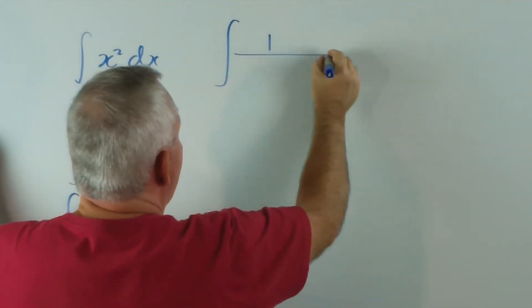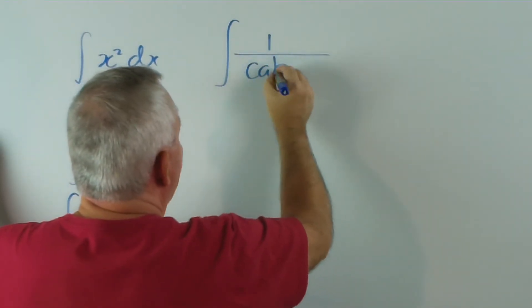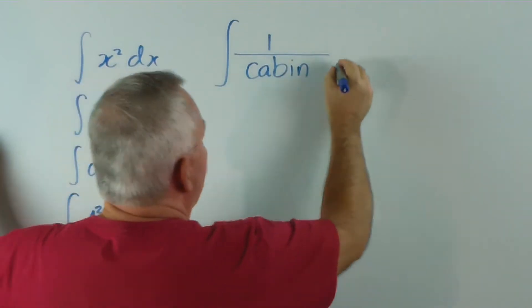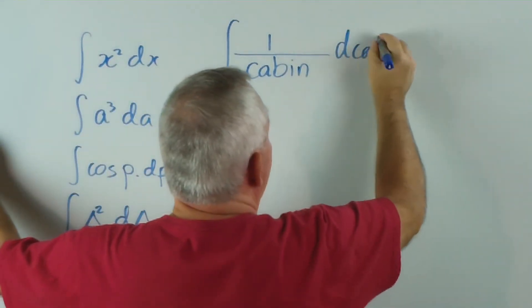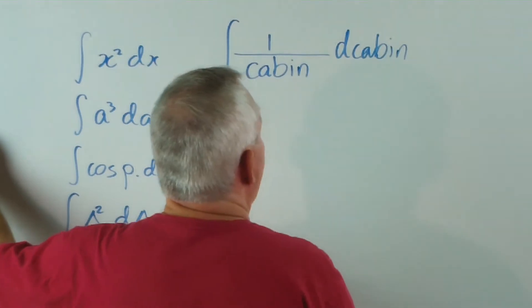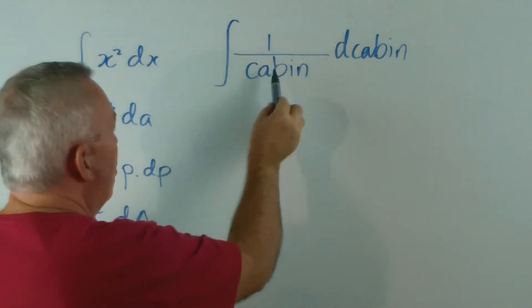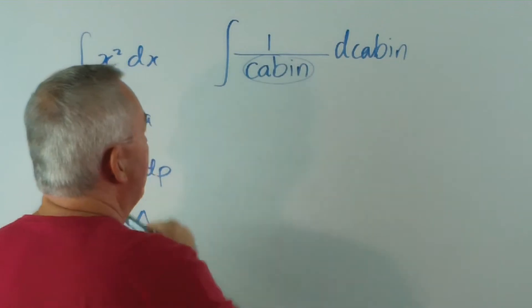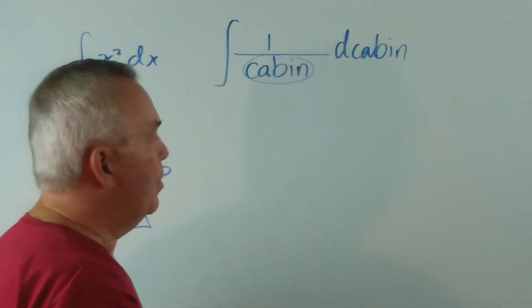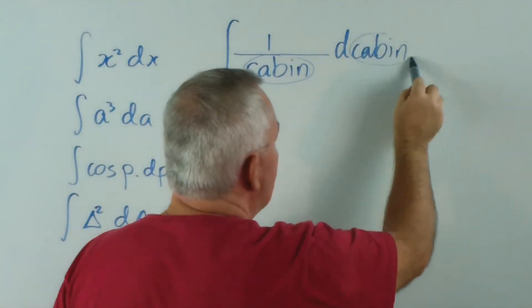What is the integral of 1 over cabin? D cabin. So, cabin... that whole word... is our pro-numeral. It represents the letter X or something like that. And it's with respect to cabin.